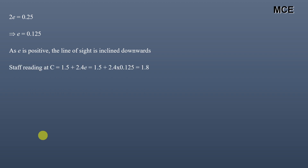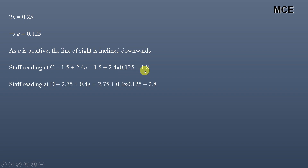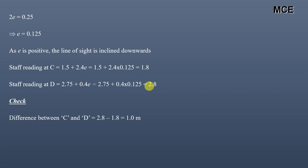The correct staff reading at C is 1.5 + 2.4E = 1.5 + 2.4×0.125 = 1.8m. The correct staff reading at D is 2.75 + 0.4E = 2.75 + 0.4×0.125 = 2.8m. We can verify: 2.8 minus 1.8 equals 1m, which matches the true difference of level, confirming the calculations are correct.